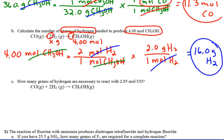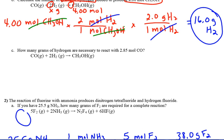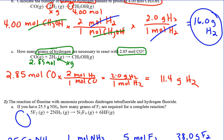Try problem 1C: 2.85 moles of carbon monoxide — find grams of hydrogen. Since you're starting with moles, you skip the first conversion fraction. The answer is 11.4 grams of H2. Like problem 1B, when given moles to start, you skip the first conversion fraction.